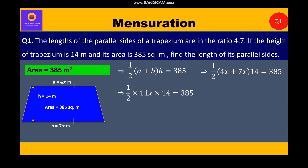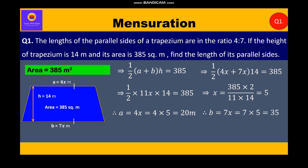Now we shall cross multiply and write x is equal to 385 into 2 upon 11 into 14. Solving further, we get x is equal to 5. Therefore, a is equal to 4x, that is 4 into 5, which is equal to 20 meters, and b is equal to 7x, that is 7 into 5, which is equal to 35 meters. Therefore, the length of two parallel sides are 20 meters and 35 meters.